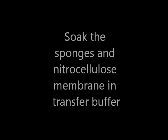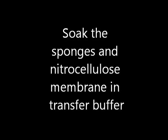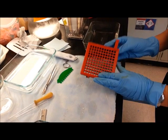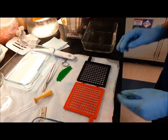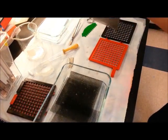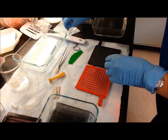Soak the sponges and the nitrocellulose membrane in transfer buffer for 15 minutes prior to assembling the sandwich. To assemble the sandwich, lay the cassette open on the bench. Build your sandwich on the black side of the cassette. Place one of the sponge sheets on the cassette.